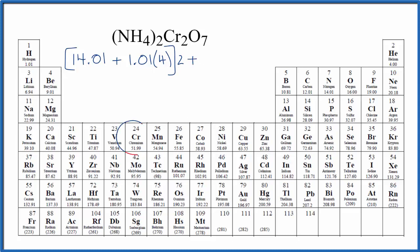For chromium, that's right here, 51.99, and we have two of those. And then oxygen, 16.00, and we have seven oxygen atoms.